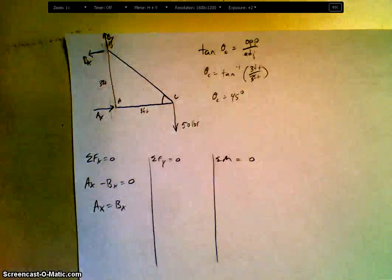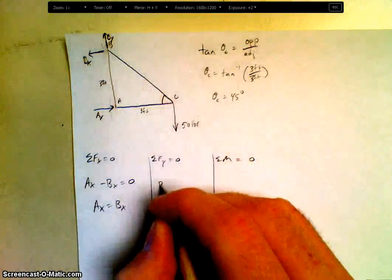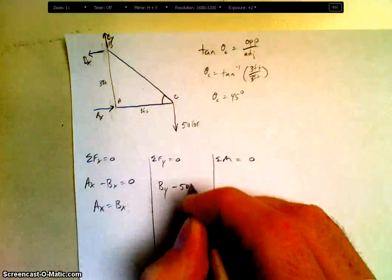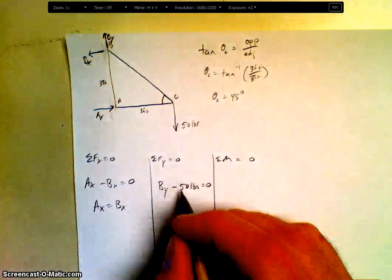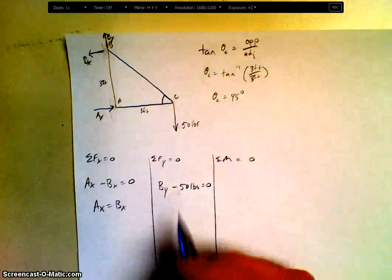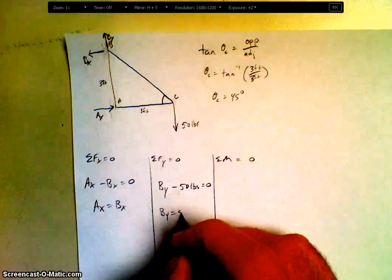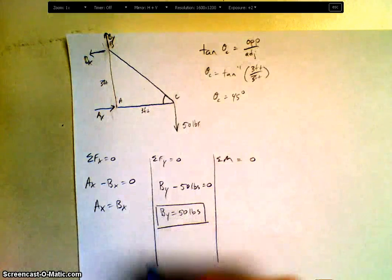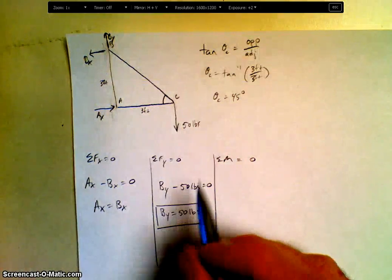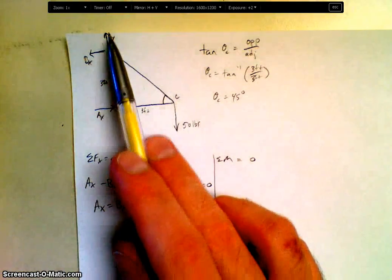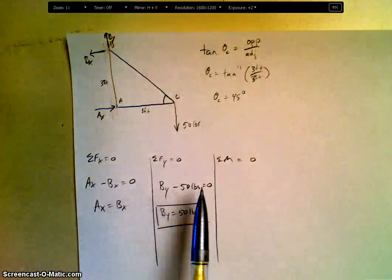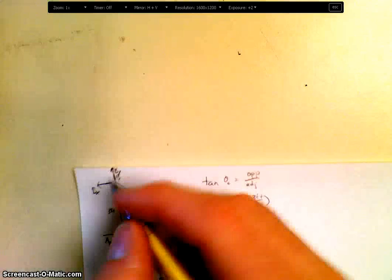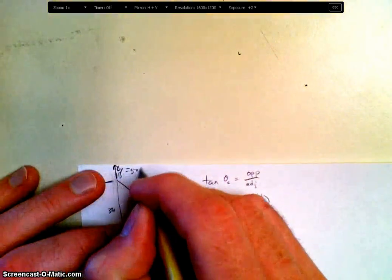What do I have in the Y direction? Positive BY and 50 pounds. The 50 pounds is negative, right? It's pointing down. So BY equals 50 pounds. What does it tell me when my answer is positive? It confirms your direction. So I confirm that that upward direction is correct. I can update my free body diagram. That equals 50 pounds up there.